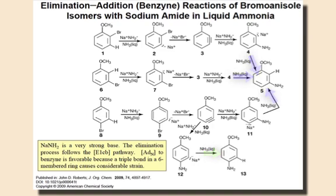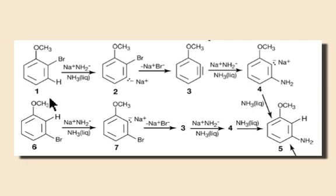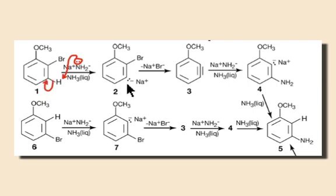Let's begin with ortho-bromoanisole, compound 1, and look at its pathway to compound 5. First, we know that sodium amide is a very strong base and very reactive. The first step is deprotonation of the proton adjacent to the leaving group, which creates the carbanion in structure 2. The carbanion then eliminates bromine. You should recognize these two steps as an E1CB pathway.